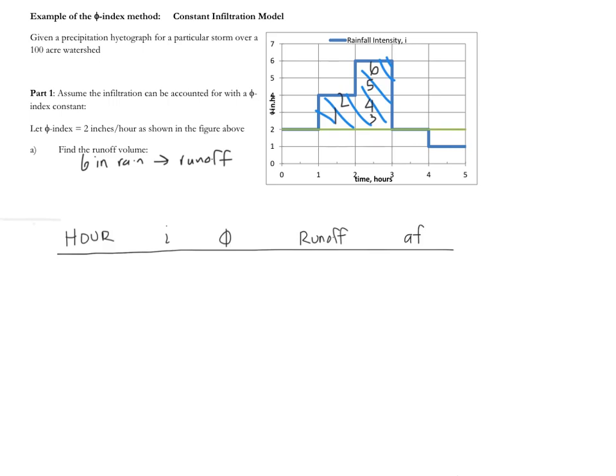So let's start by looking at hour one. So this is going to go from zero to one. In that hour the rainfall intensity is two inches per hour, the infiltration is two inches per hour. The runoff therefore is zero, and then we're going to convert this to acre feet, and that is also zero.